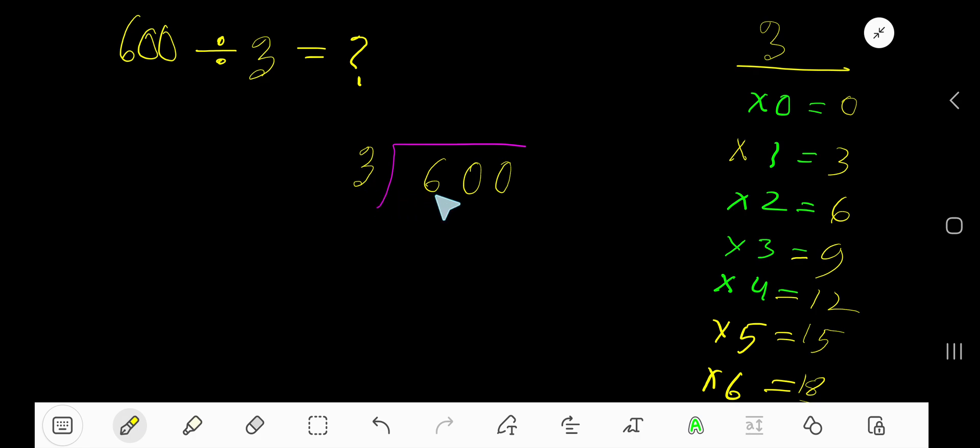3 goes into 6 how many times? 3 goes into 6 two times. Write 2. 2 times 3 is 6, subtract, we are getting 0. Bring down this 0. So 0, 0 means 0. 3 goes into 0 how many times? 0 times.